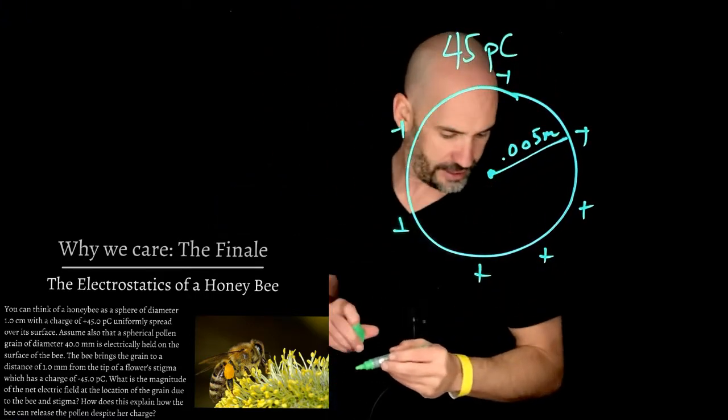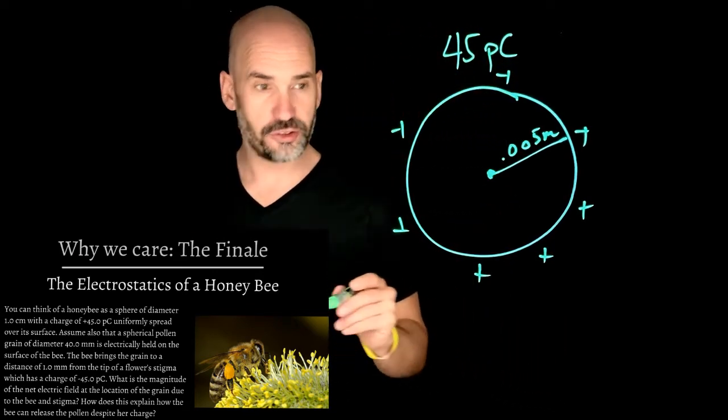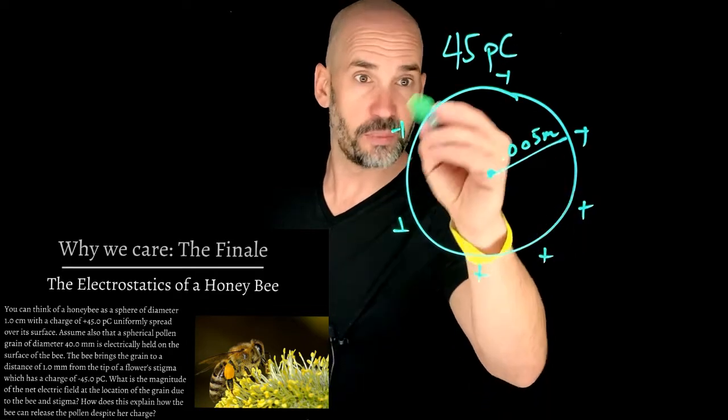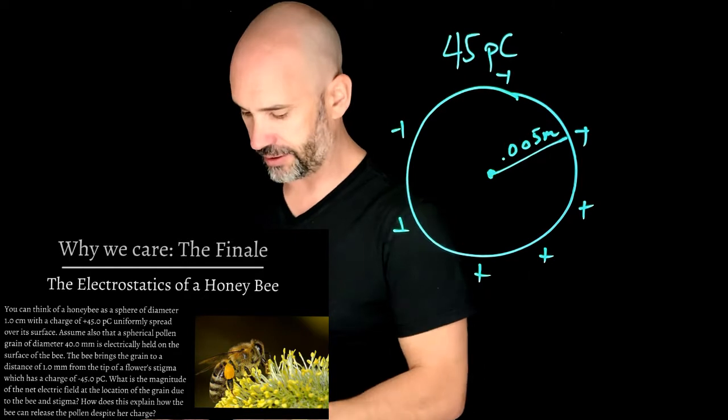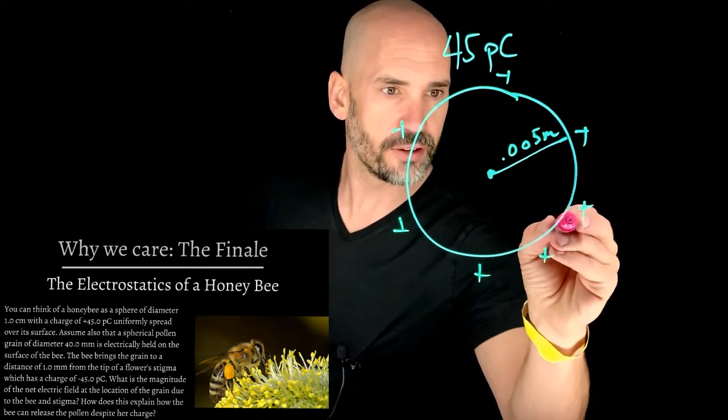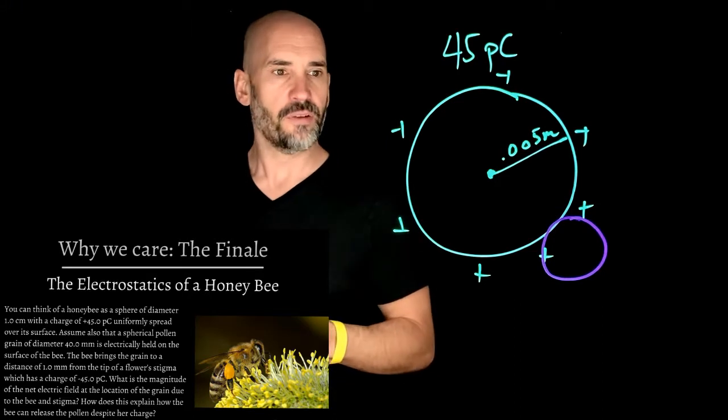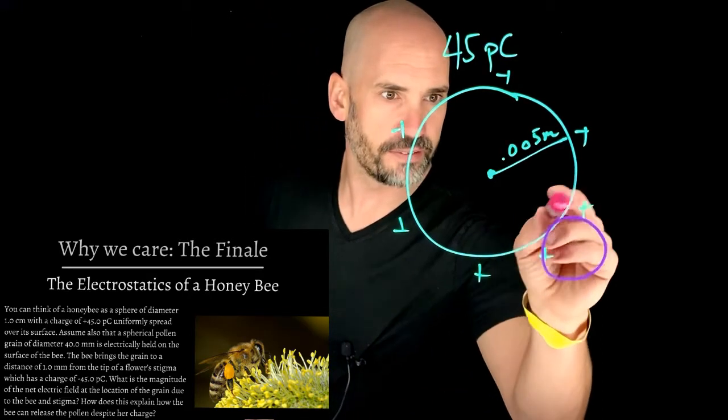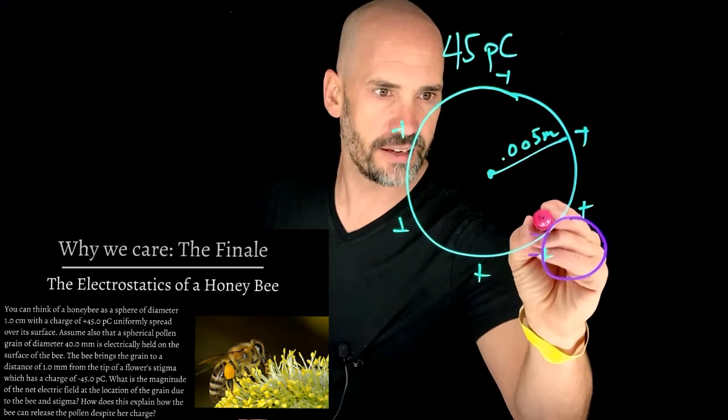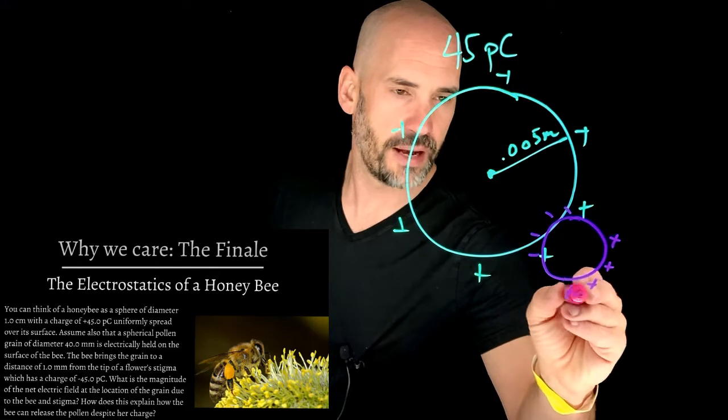And that charge is 45 picocoulombs, or times 10 to the minus 12. So attached to that, because of that charge, then it'll hold a little piece of pollen. And I'll make the pollen a different color. The pollen is this color right here. Okay. And remember, that'll cause a little polarization, because if this is positive on the outside, then the negatives will be on this side of the pollen, and the positives will be on this side of the pollen.